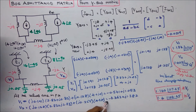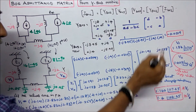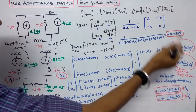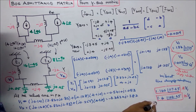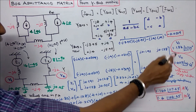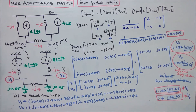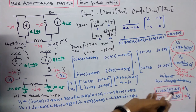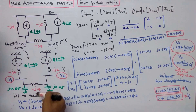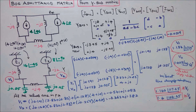Similarly, V2 in rectangular form equals minus 0.362 plus J1.382. In polar form, V2 equals 1.429 angle 104.68 degrees. Without line charging admittance, V2 was 1.4; with line charging admittance, V2 is 1.429. With line charging admittance, there is a slight increase in voltage for both buses. With this, I conclude my lecture. Thanks for listening.